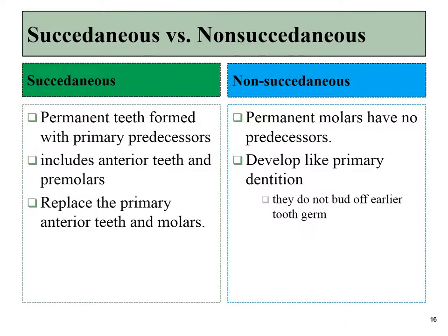This clarifies the difference between succidaneous and non-succidaneous teeth. Succidaneous permanent teeth form off of the tooth buds of their primary predecessors; this includes all anterior teeth and premolars. Non-succidaneous teeth have only one tooth bud that forms off of the oral epithelium, developing like primary dentition without a second tooth bud growing off of the first.